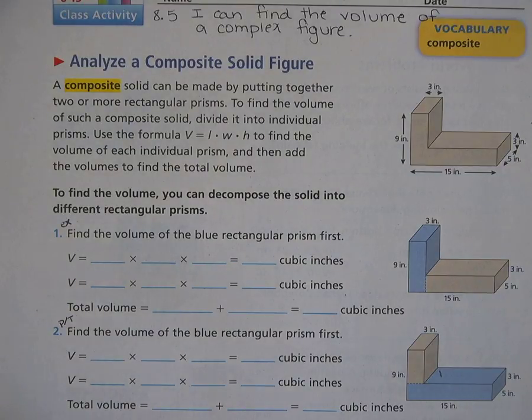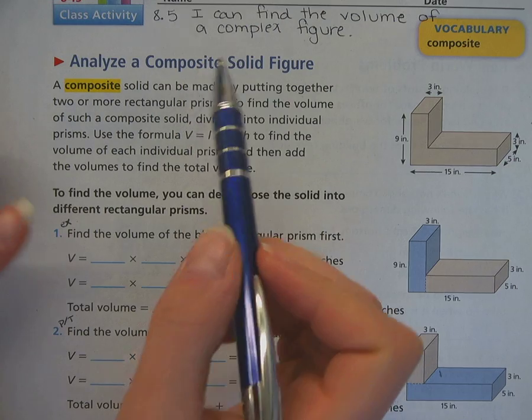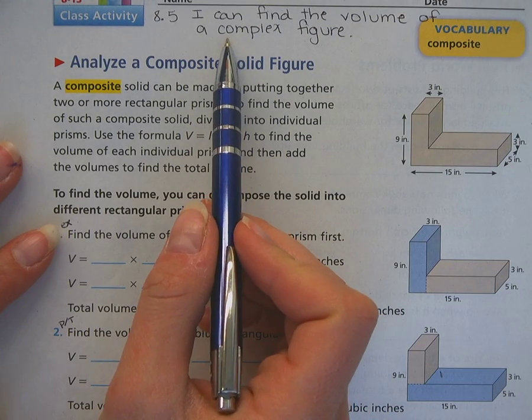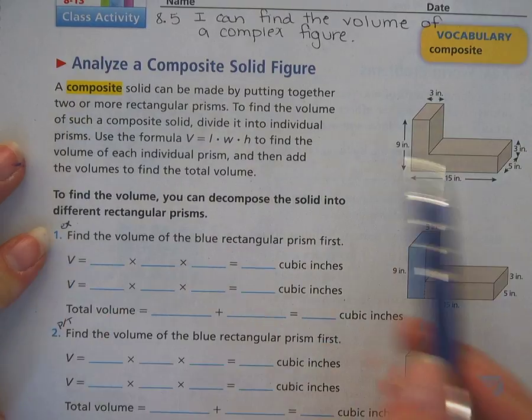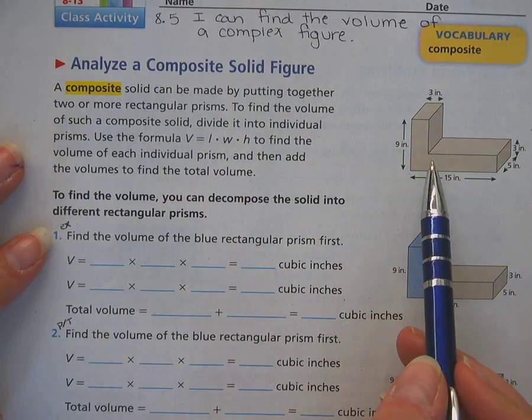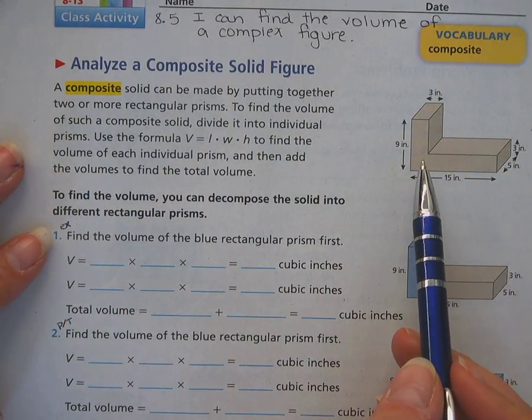Moving on to learning goal 5, I can find the volume of a complex figure, which should be already on there. We are going to talk about now taking what we know about finding the volume of a rectangular prism and applying that to a more complex shape.